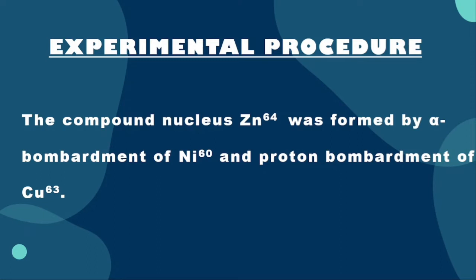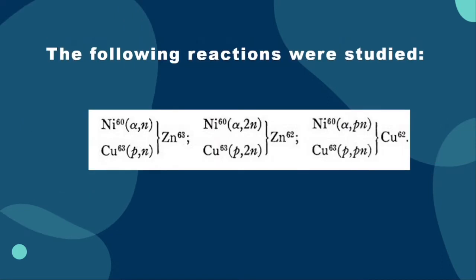The experimental procedure done for this experiment was that the compound nucleus zinc-64 was formed by alpha bombardment of nickel-60 and proton bombardment of copper-63. Dr. Ghossal also studied the following reactions where he bombarded nickel-60 and copper-63 to form zinc-63, zinc-62, and copper-62. The excitation curves were determined by using the stacked foil method. The alpha excitation curves were obtained by using the 40 mega electron volt alpha beam from the 16th cyclotron. The proton excitation curves were determined by using the 32 mega electron volt proton beam from the Berkeley linear accelerator.